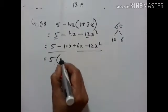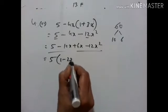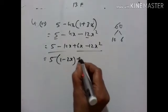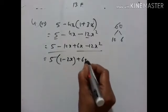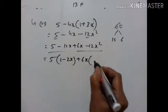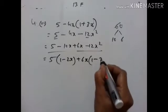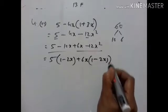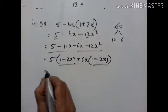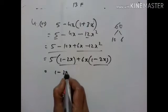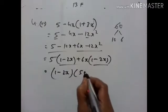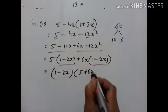Here 5 is common: 1 minus 2X plus 6X. Minus 12X is common, and 1 minus 2X is common. So the factored form is 1 minus 2X into 5 plus 6X.